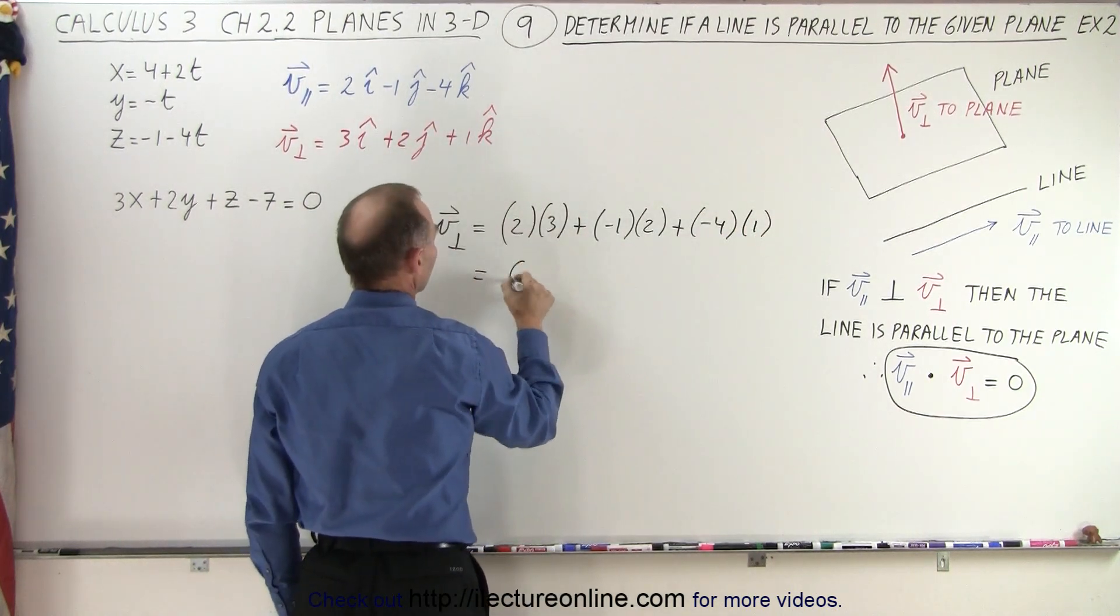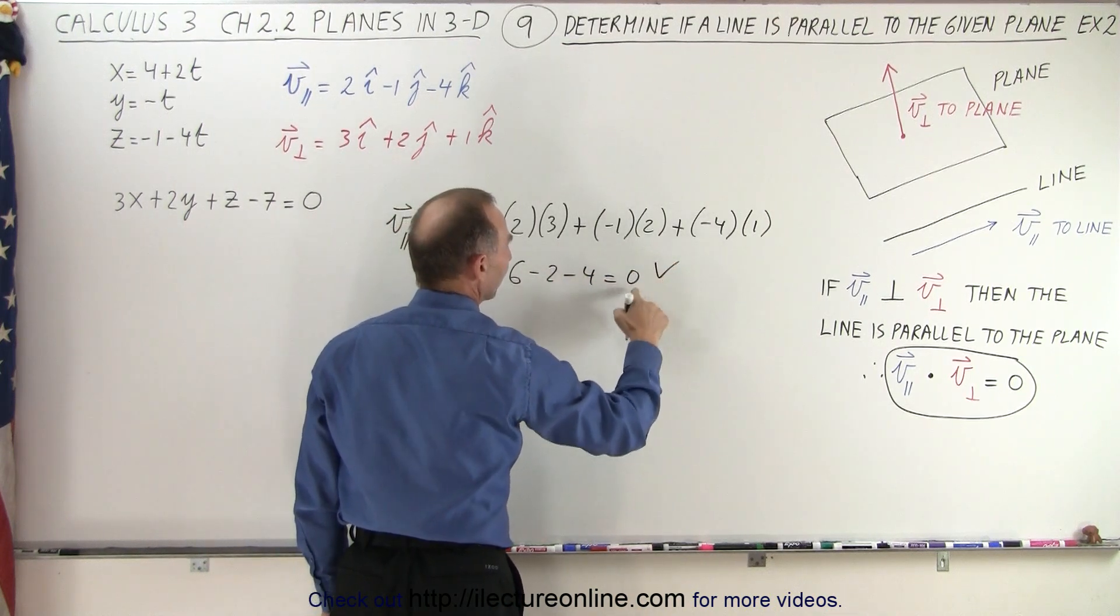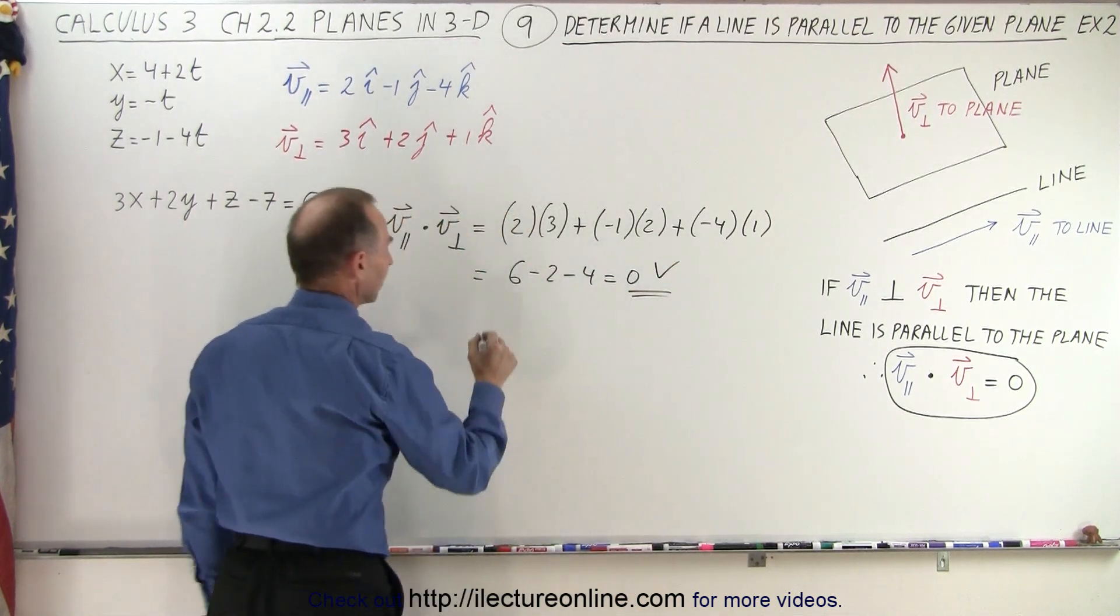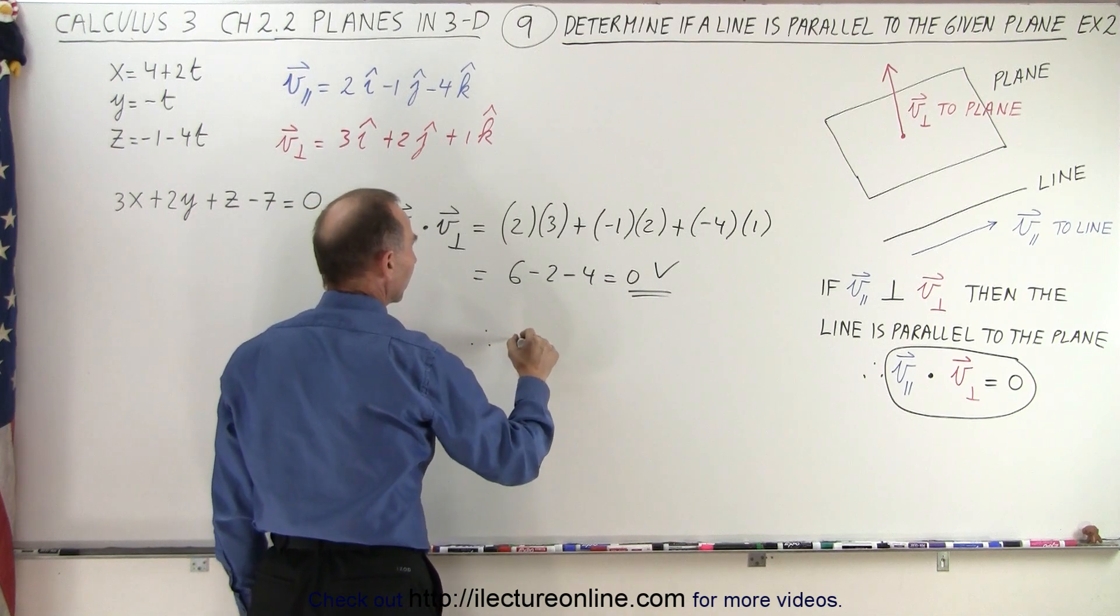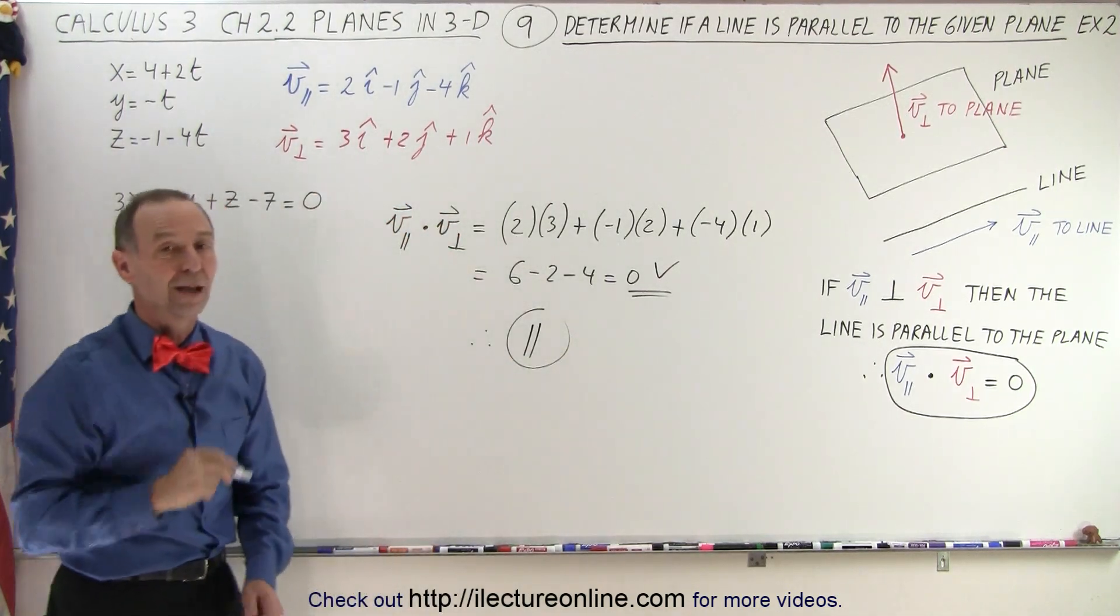Okay, that is equal to 6 minus 2 minus 4, which is equal to 0. And therefore, since it's equal to 0, therefore we can say they are parallel. And that is how it's done.